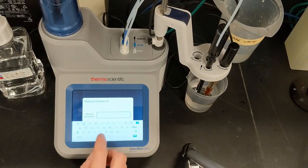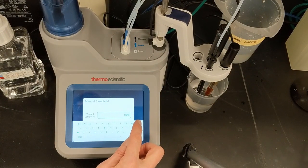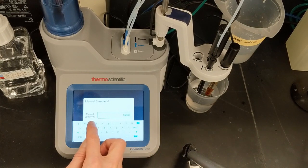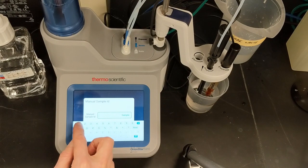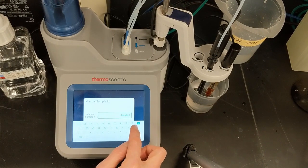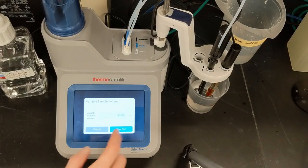Since I've chosen the Manual Sample ID option, I can type in the name I want to be saved in the log. I'll just use Sample 1. The sample volume is 100 mL and I touch Save Run to start the titration.